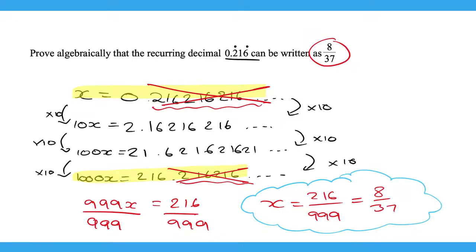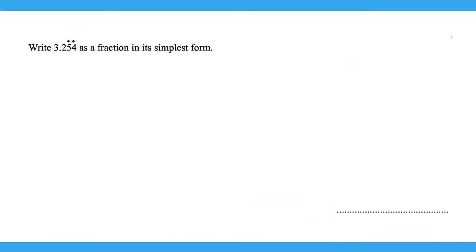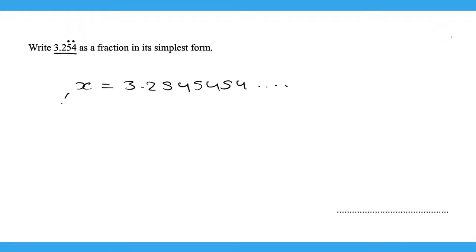Next question: write 3.2̄5̄4̄ as a fraction in its simplest form. Let x equal 3.254 where the dots are above the 5 and 4, so only 54 recurs: 3.254545454... Multiplying by 10 gives 10x = 32.54545...